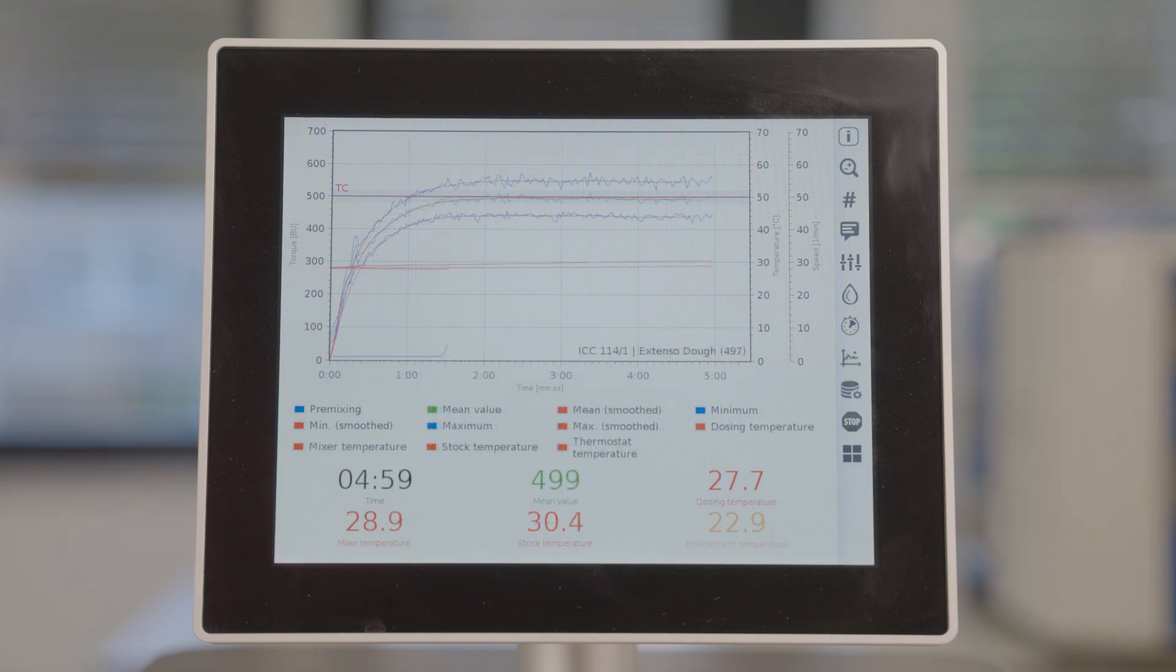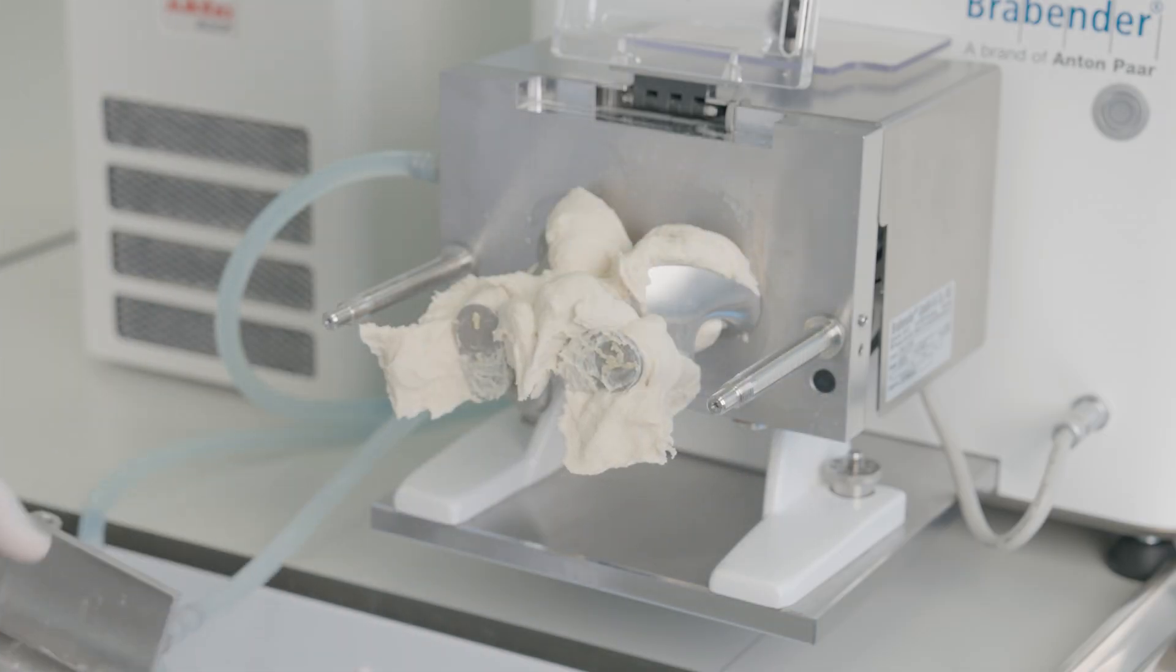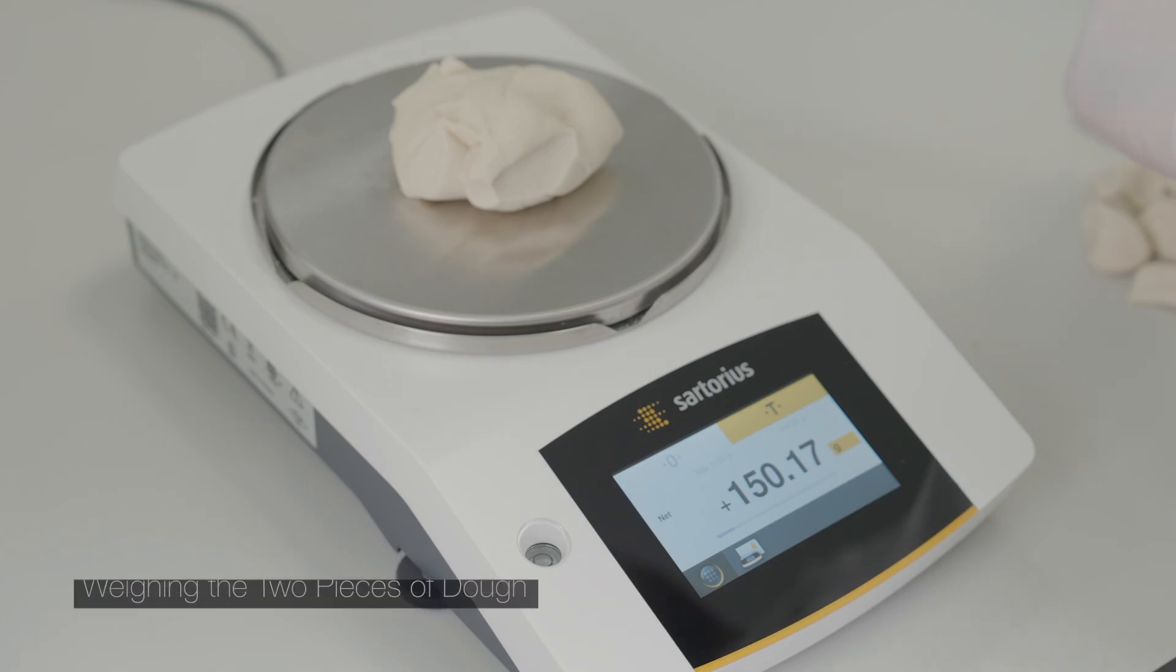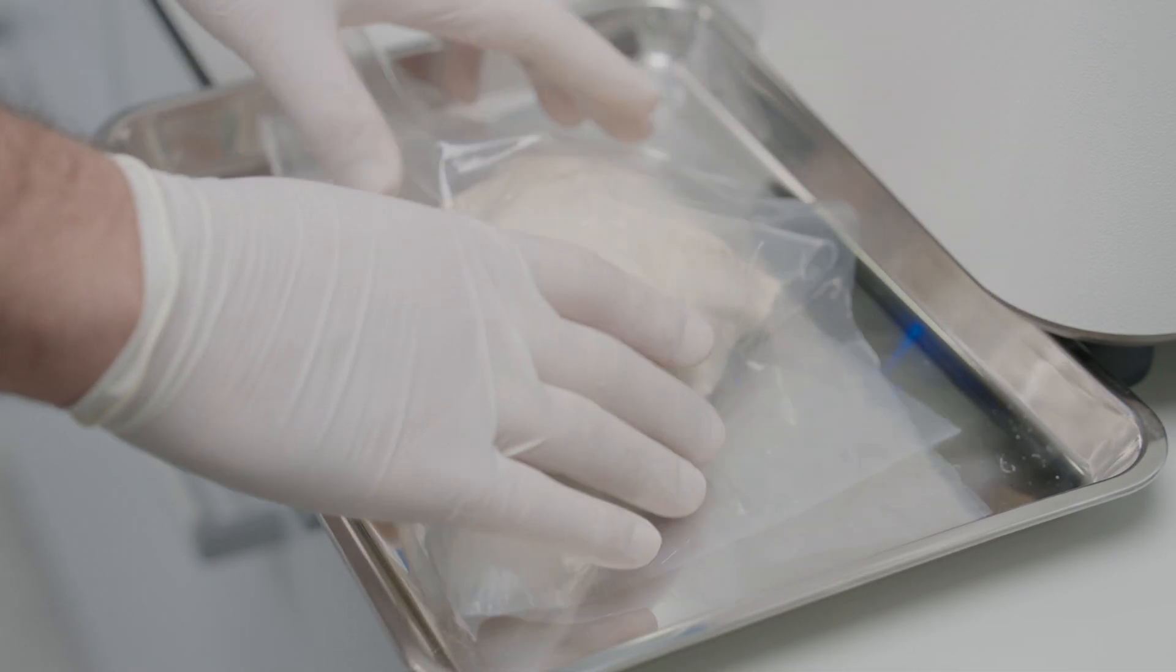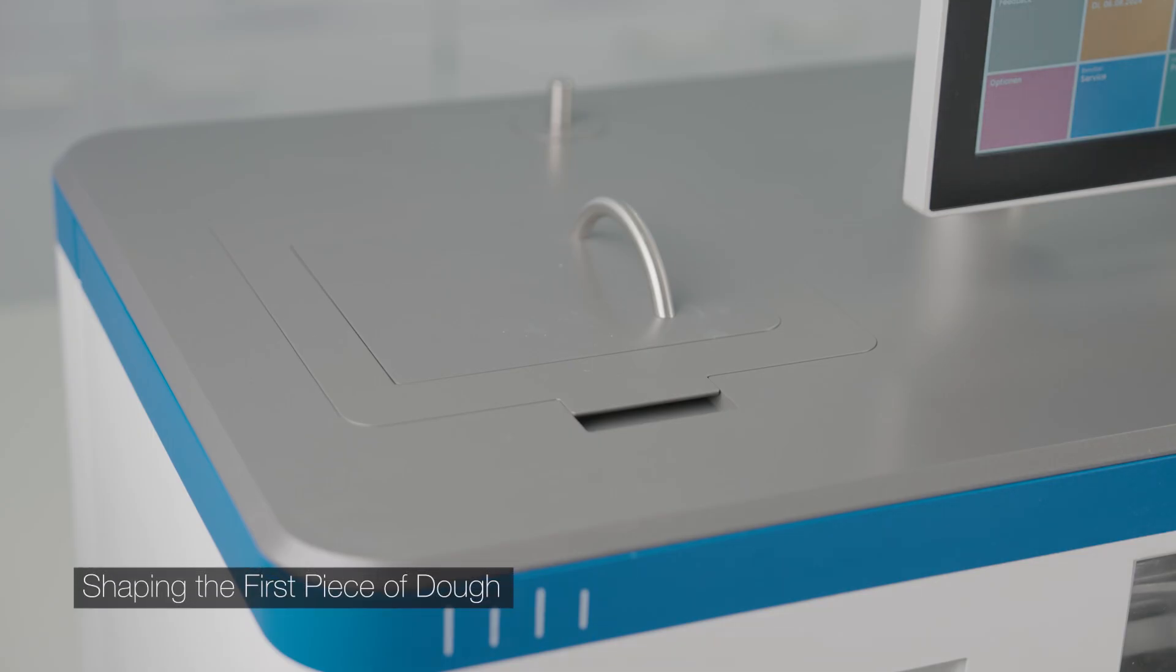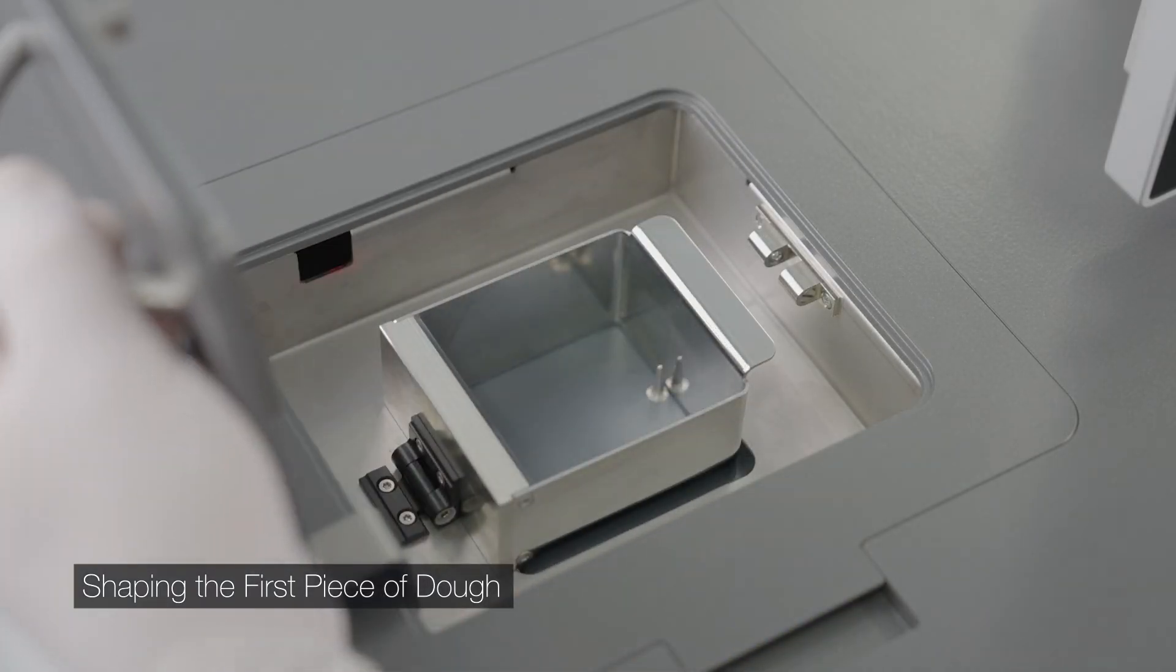The instrument stops automatically. Open the mixer and remove the dough. Cut two pieces of 150 plus or minus 0.5 grams, as extensograph measurement is duplicated with two pieces. Wrap one piece in foil while preparing the other to prevent it from drying. Place the dough in the dough shaping box.